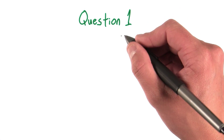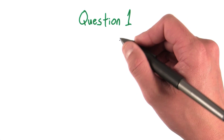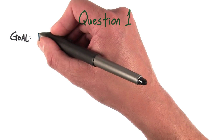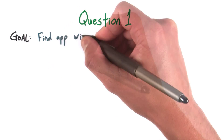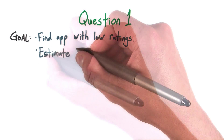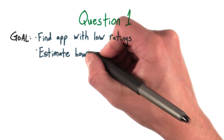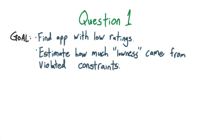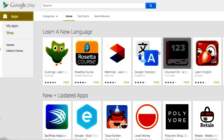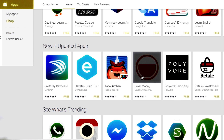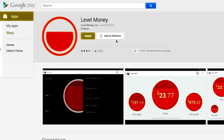This first question requires a bit of explanation, so bear with me. The goal of this question is to find an app on the Play Store that has low ratings, then estimate how much of that low rating came from violated constraints. We're going to do this by going to the Google Play Store and finding an app with a relatively low review — let's say below 3.5 stars.